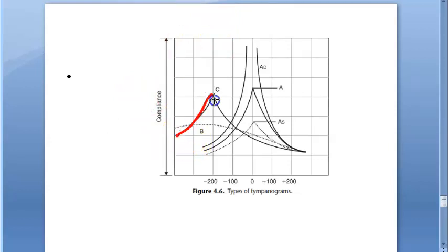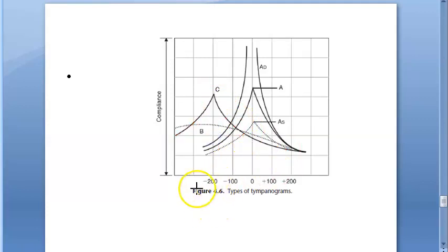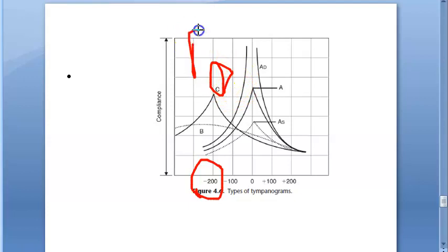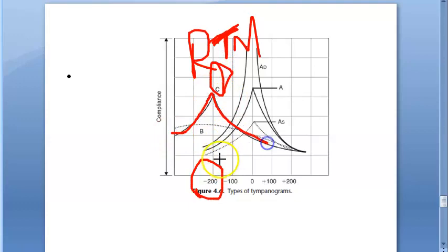Now look at Type C. Here, maximum compliance occurs at negative pressure — more negative than minus 100 mmHg. Why does this happen? If the tympanic membrane is retracted or there is some fluid in the middle ear, you get this kind of curve where maximum compliance is at negative pressure — indicating a retracted tympanic membrane.